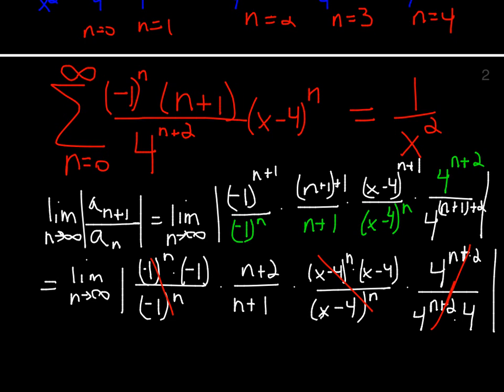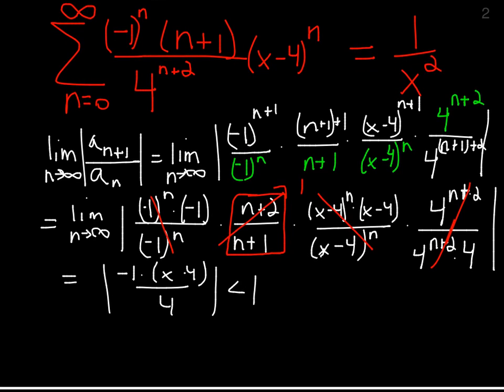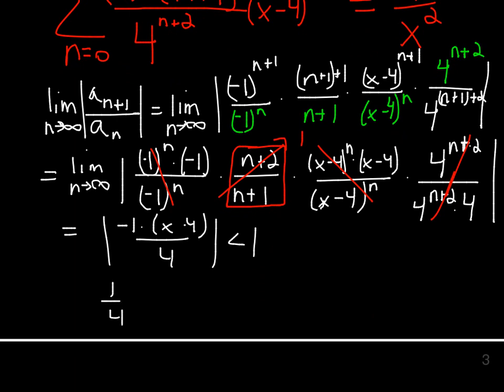Well, n plus 2 over n plus 1 converges to 1. So we have negative 1 times the quantity x minus 4 all over 4 in absolute value. And you have to be less than 1. That's going to occur if 1/4 times x minus 4 in absolute value is less than 1. And that means that absolute value of x minus 4 has to be less than 4. It's only valid for those x's.